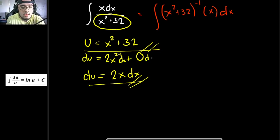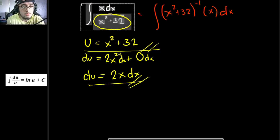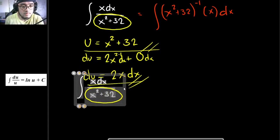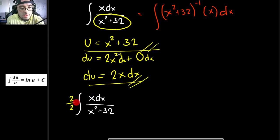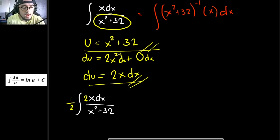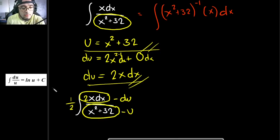Comparing our expression, we have x dx, but du is 2x dx. There is a missing factor of 2. To fix this, I will introduce the identity 2 over 2, so we are just multiplying by 1. Moving the 2 inside the integral, this becomes 1 half times the integral, and now the interior matches our du format exactly.